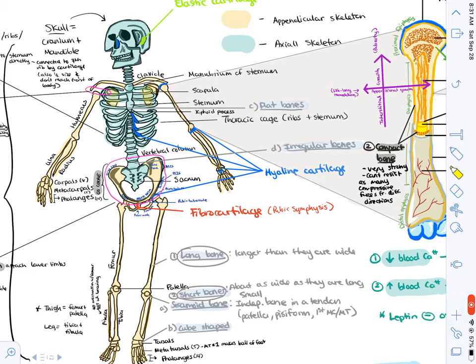The cells of bone - there's three cells that you need to know. There's osteoblasts, which are the cells that make the extracellular matrix. Then you have osteocytes, which are mature osteoblasts that maintain the matrix. And then you have osteoclasts, which resorb bone and break down the matrix.